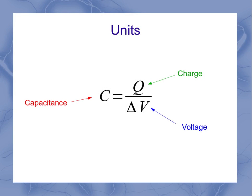In terms of units, we already know that charge is measured in Coulombs and voltage is measured in volts. So a Coulomb per volt gives us our unit for capacitance, which is actually capital F, which stands for a farad.